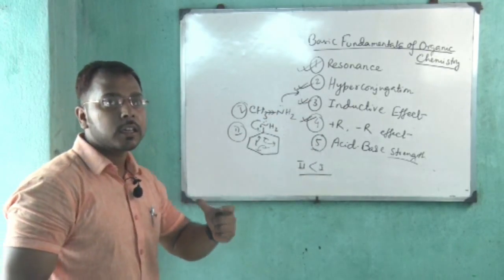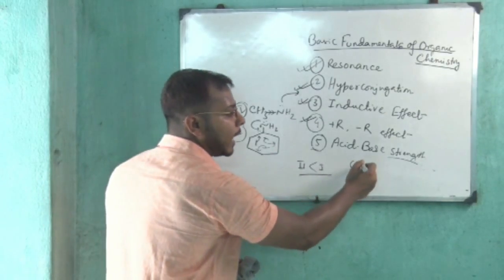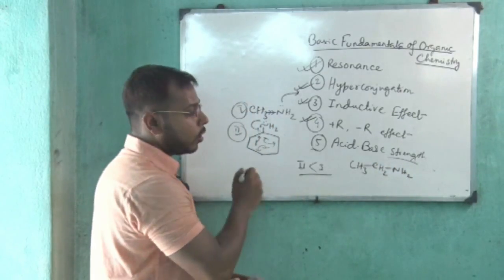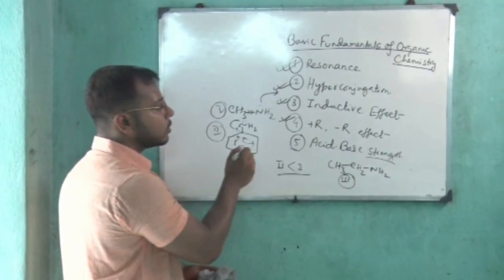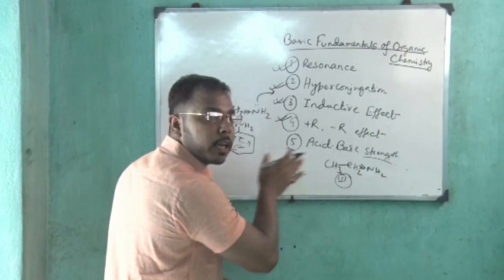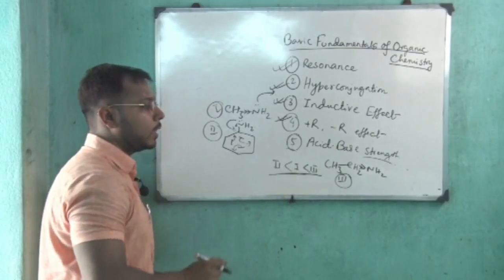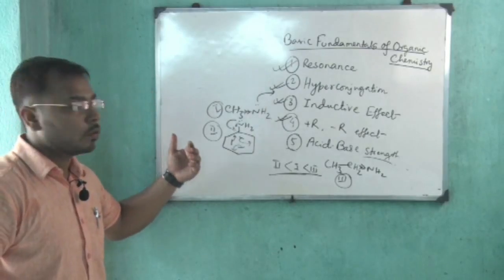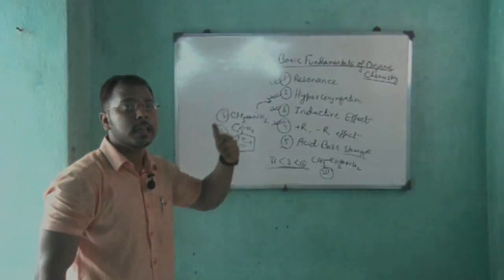Basicity is determined by electron-donating ability. If ethylamine is compound 3, then since the ethyl group has more electron-donating ability compared to methyl, ethylamine is more basic than methylamine. So the basic order is: 3 (ethylamine) > 1 (methylamine) > 2 (aniline). In conclusion, plus I effect increases basicity and minus I effect increases acidity.